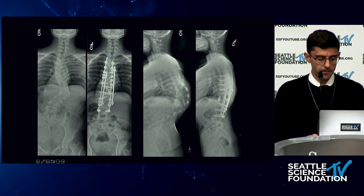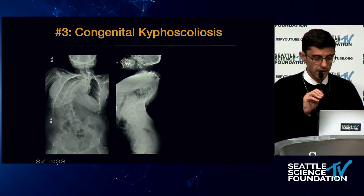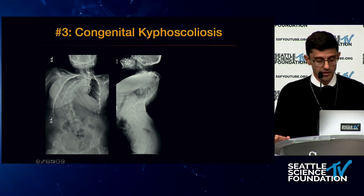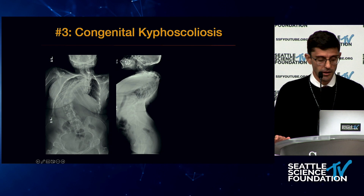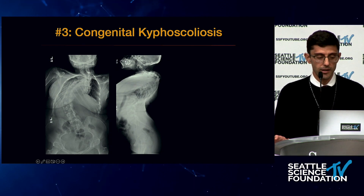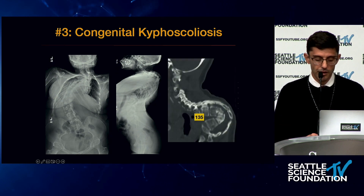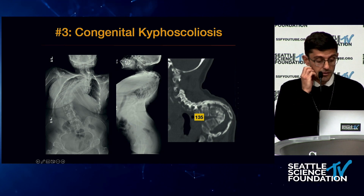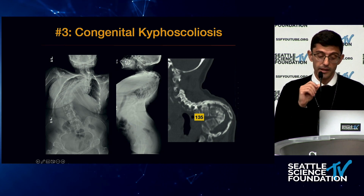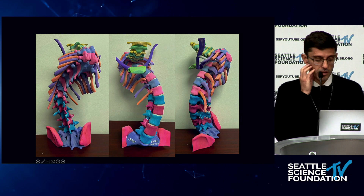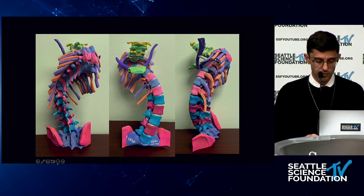A more recent case — congenital kyphoscoliosis. The patient had an in-situ fusion of T3 to T5 in Mexico and had essentially a chin-on-chest deformity, having a lot of trouble breathing with very restrictive lung disease. CT showed 135-degree kyphosis and similar deformity in the coronal plane. 3D modeling showed the attempted in-situ fusion and the degree of deformity.